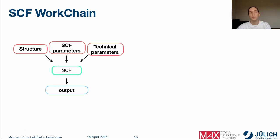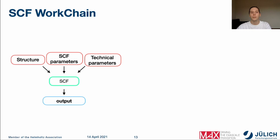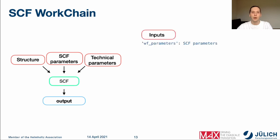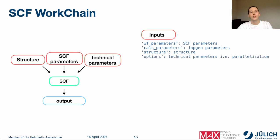Now let's look at the input configuration for the self-consistent work chain. The self-consistent work chain accepts the structure and other technical parameters as input. It requires parameters that define its logical behavior, calculation parameters that define the behavior of the inp.gen calculation, the structure for which we want to converge the charge density, how many MPI processes the Floor calculation should use, and the queue name on the supercomputer.